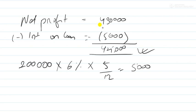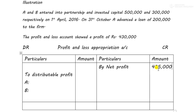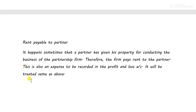Net profit minus interest on loan: 430 minus 5,000 gives 4 lakh 25,000. This amount goes to the profit and loss appropriation account. Since no profit sharing ratio is mentioned, profit is split equally — each partner gets 2 lakh 12,500. The key point is that if you incorrectly post interest on loan inside the appropriation account, your marks will be deducted for wrong treatment even if the final answer is the same.